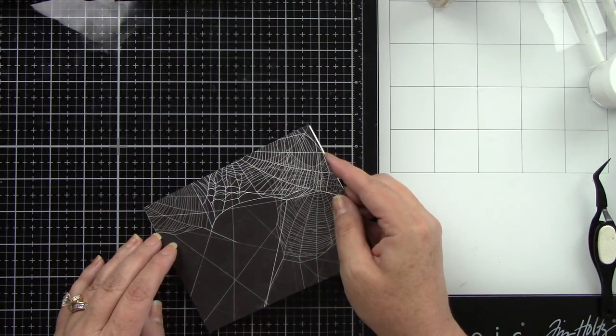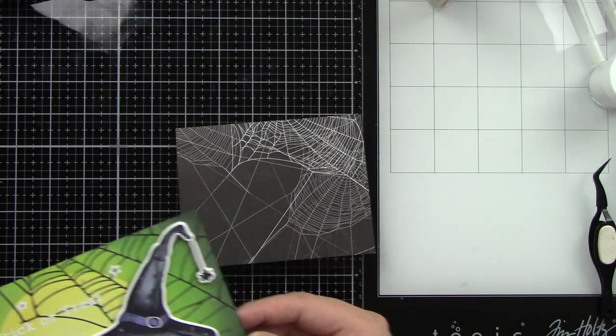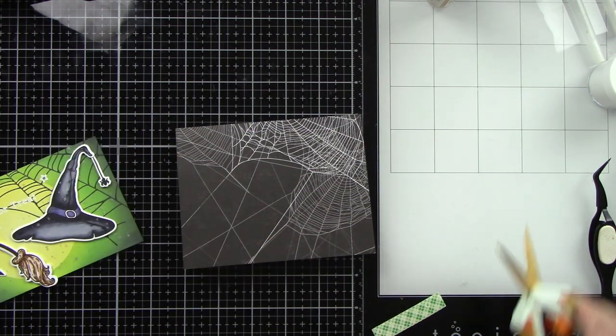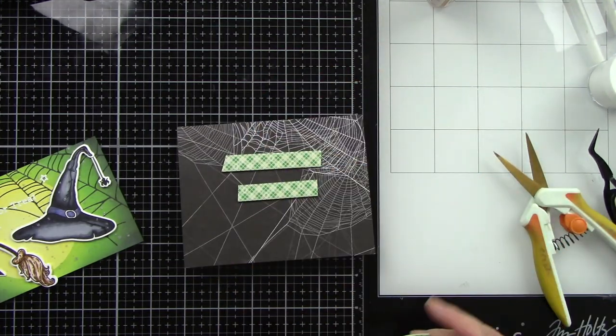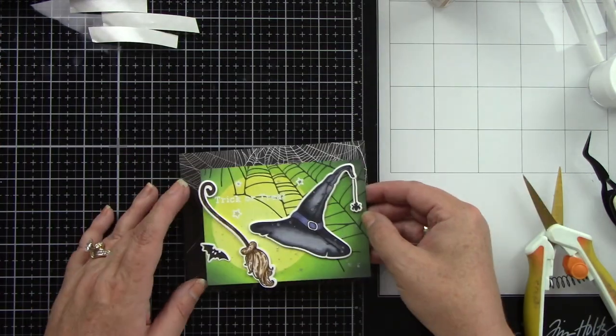Now I have that patterned paper from the Spooktacular paper pad trimmed down to A2 size, adhered to my white A2-size card base. I want this inked-up background popped up with foam tape, so I'm adding a bit to the center of my card.